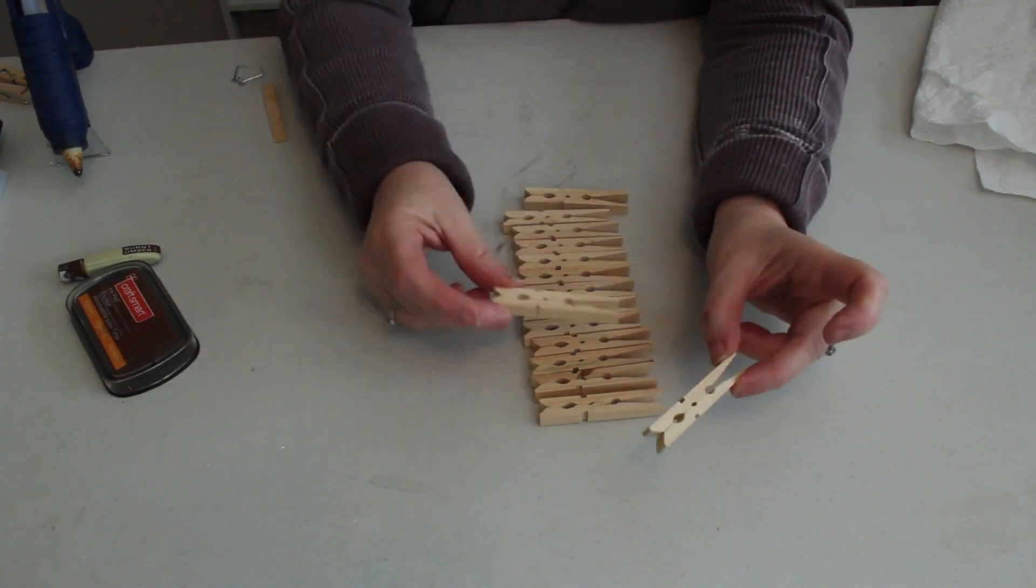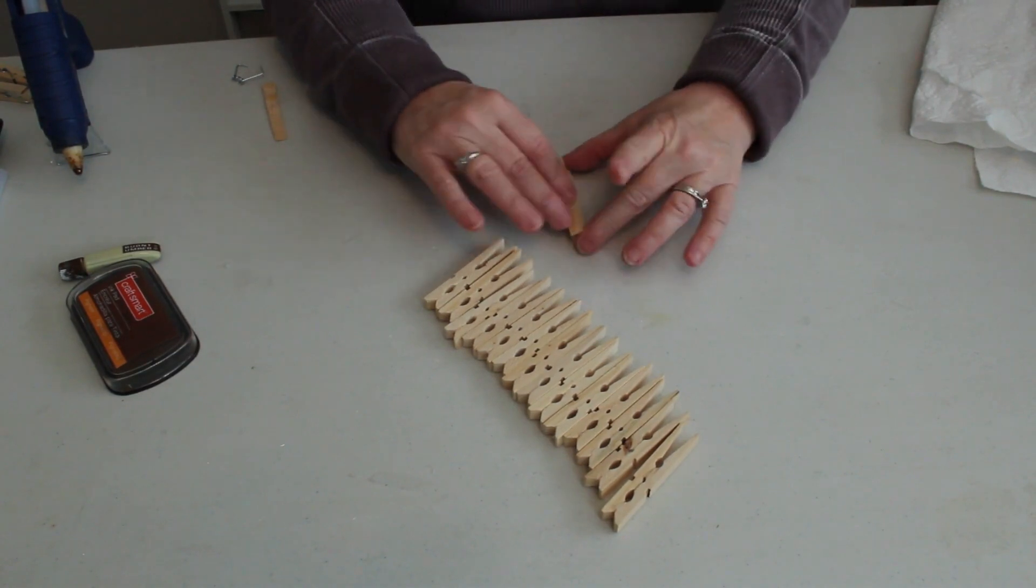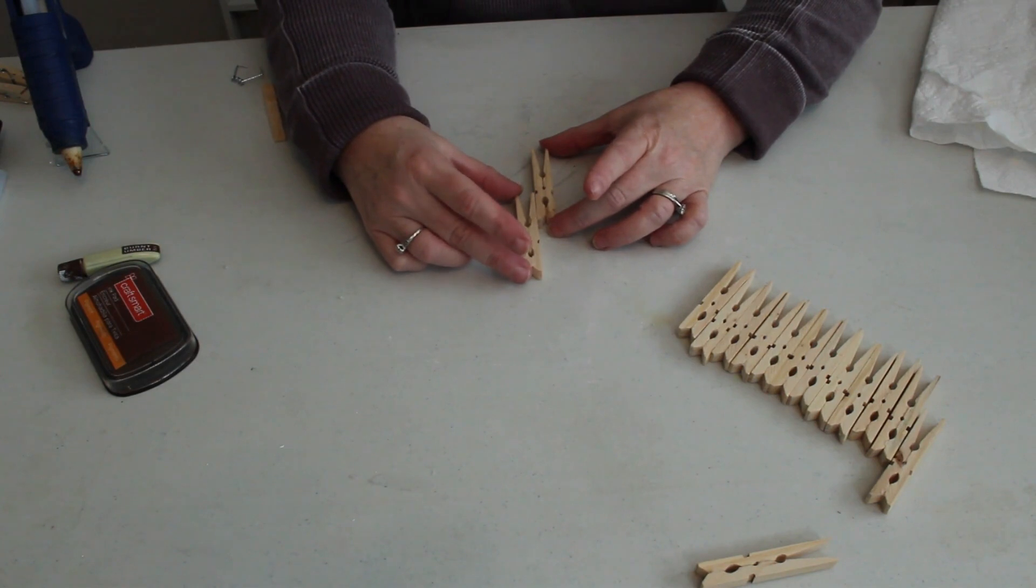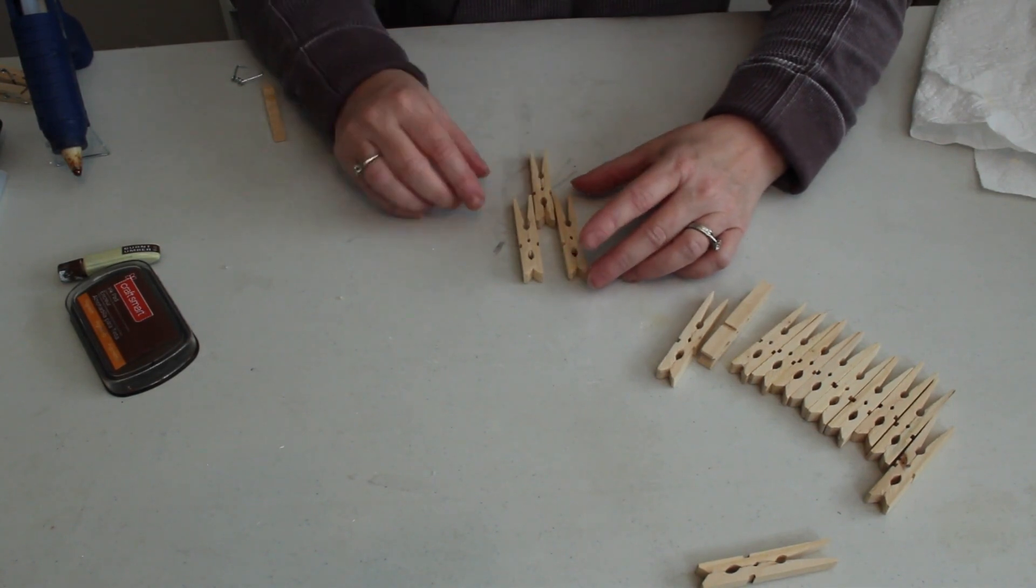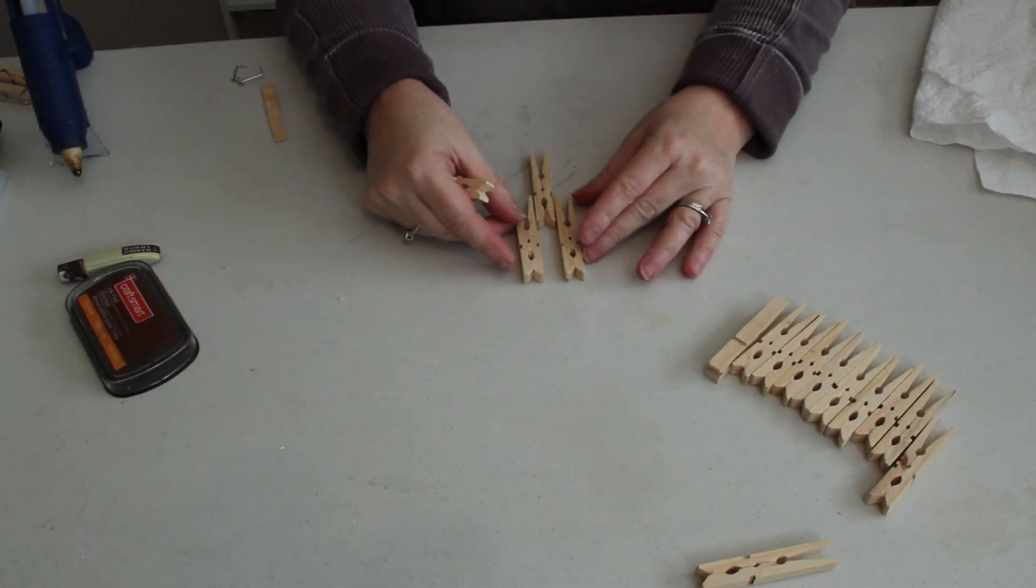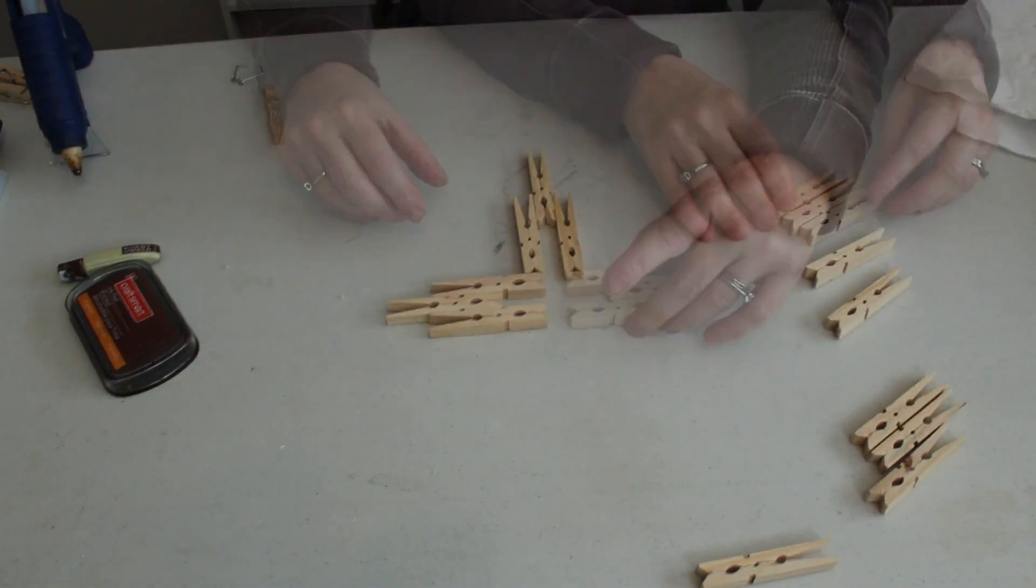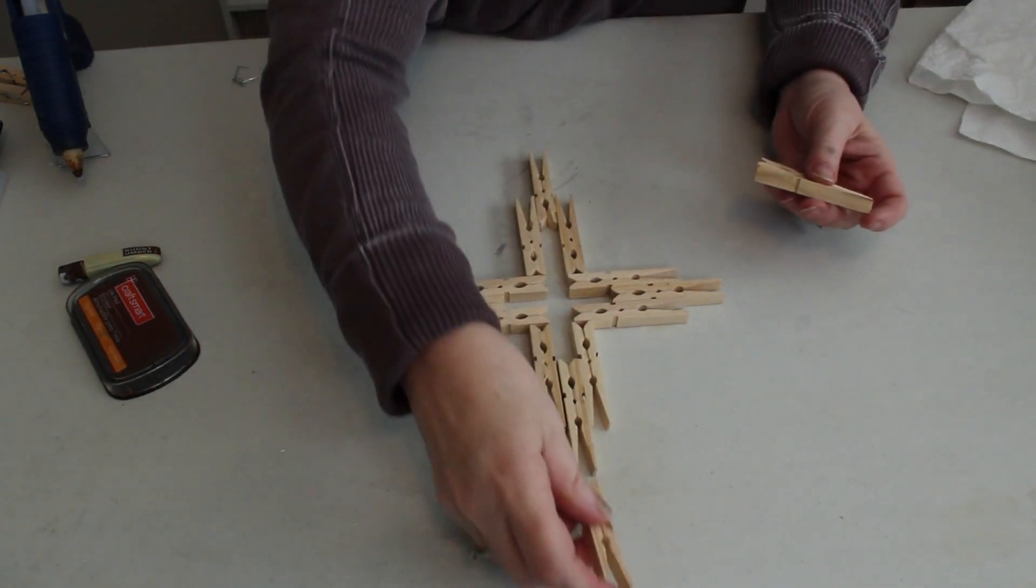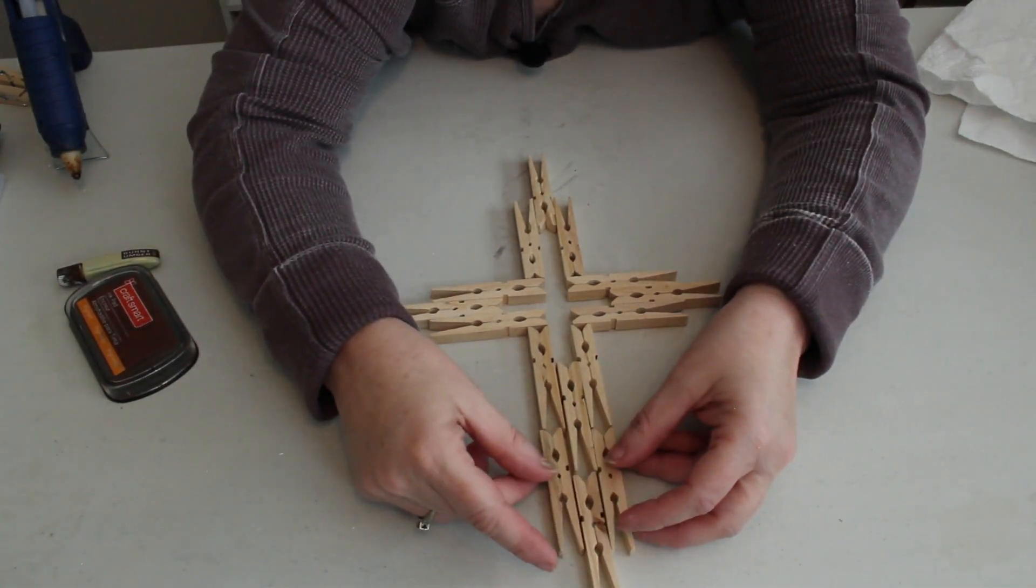So I have them all glued together now and the way we're going to form them is we're going to take and do them in sections of three. We take one and put it in the middle and then I'm going to line the other two up by the little cut that's in there where the spring was. So that's how I'm going to line them up.